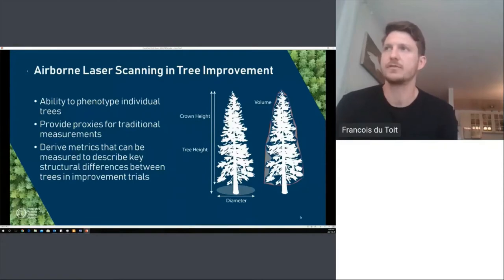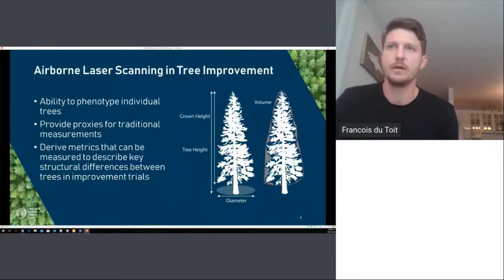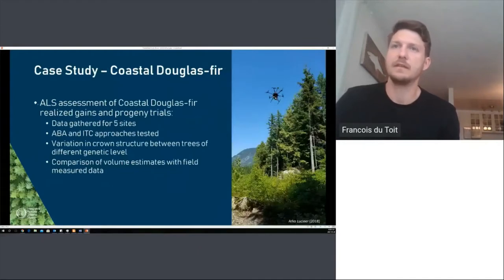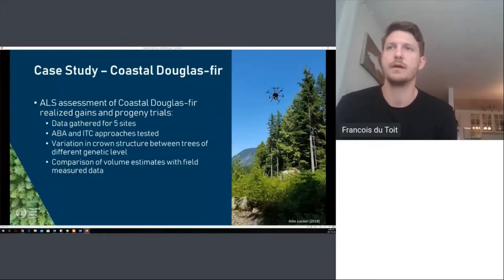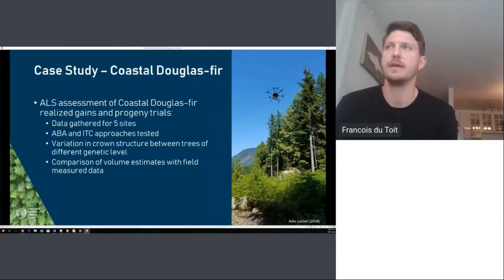We can derive metrics that describe key structural differences between trees in improvement trials — things like tree volume or how points are distributed through the tree crown. This leads us to our case study on coastal Douglas fir. We collected data for two types of genetics trials at five different sites and tested a variety of approaches, looking at variation in crown structure at the individual tree scale and at the branch scale, as well as comparing volume estimates from LiDAR with field-measured data at the plot level.